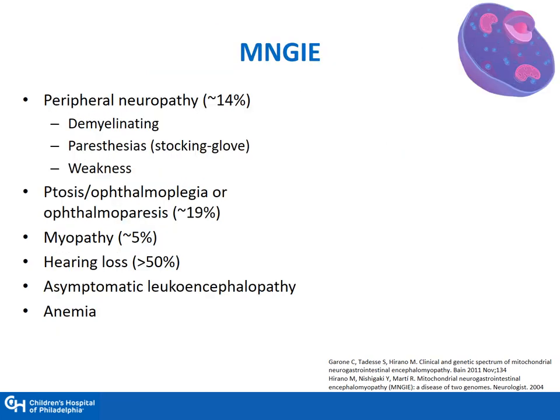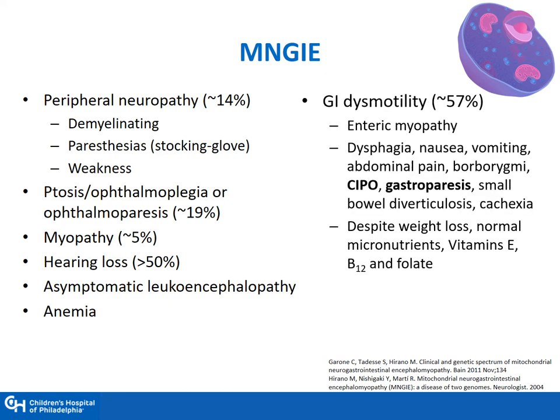When we think about MNGIE, there is a variety of different clinical presentations. Some patients have peripheral neuropathy, ptosis, and myopathy. More than 50% present with some degree of hearing loss. From a GI perspective, more than half have symptoms, and the two most common symptoms are chronic intestinal pseudo-obstruction and gastroparesis — mostly secondary to enteric myopathy.